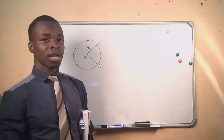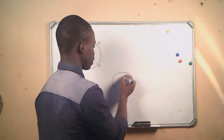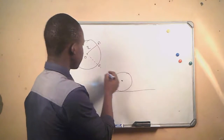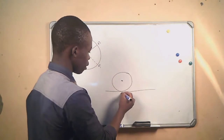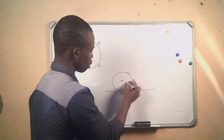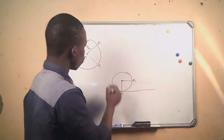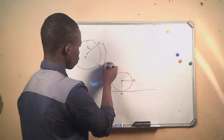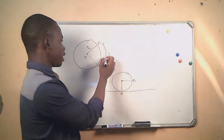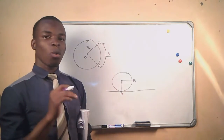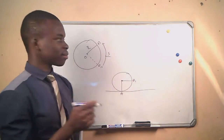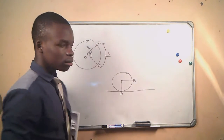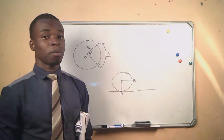Now, if this wheel was resting on a horizontal plane, the distance from A to A1 would be our displacement, which is s — that is our linear displacement. But since we are dealing with angular motion, we will make use of the angle theta. Theta is the angular displacement.